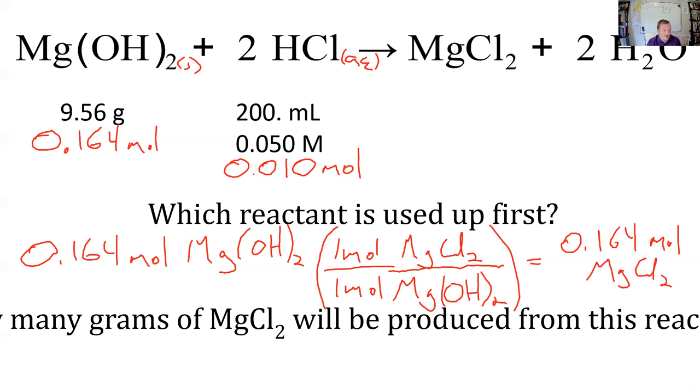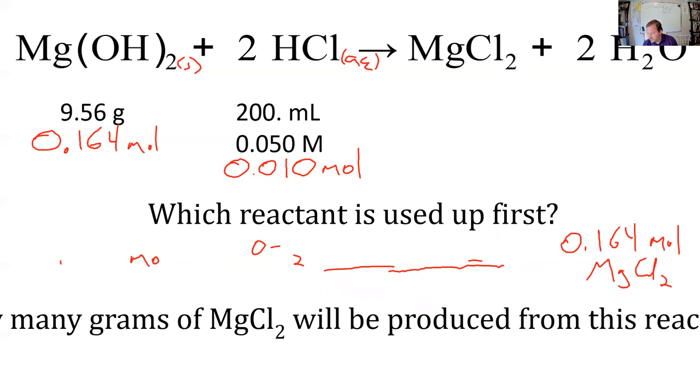And then we're going to compare that to, if we used up all of our HCl, how much product could we need? Is there any way that you could just verbalize one more time? I just have trouble seeing how to set up with the words, like, will be produced, like, trying to figure out.